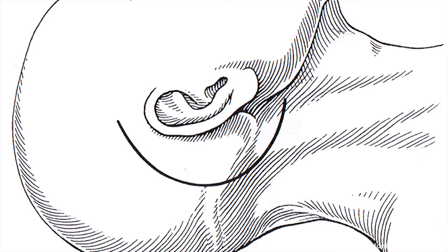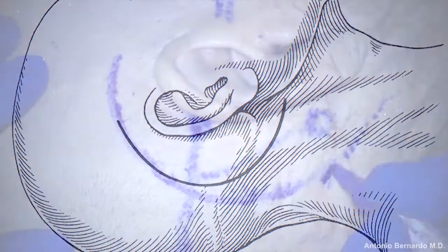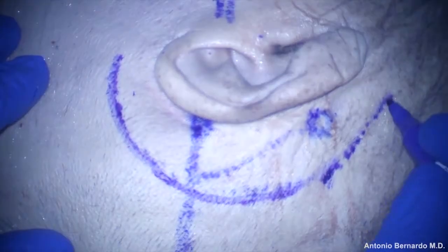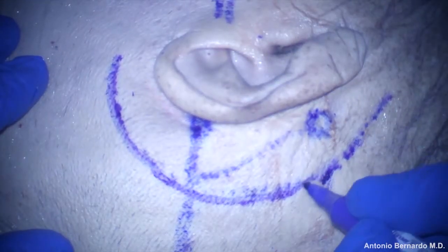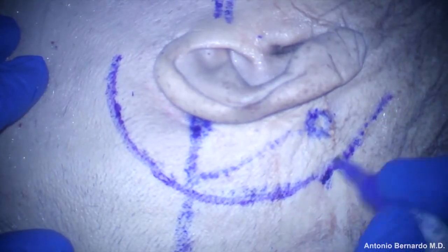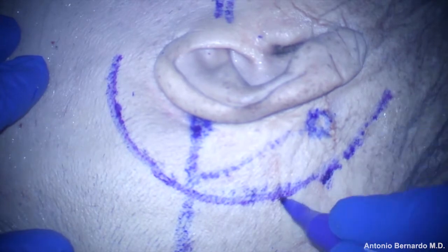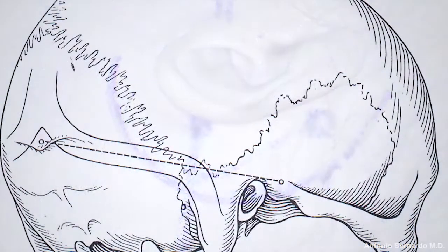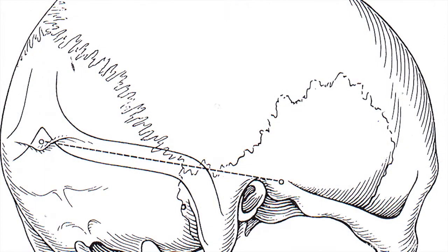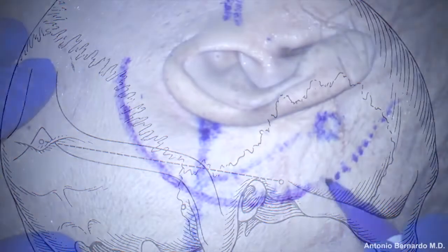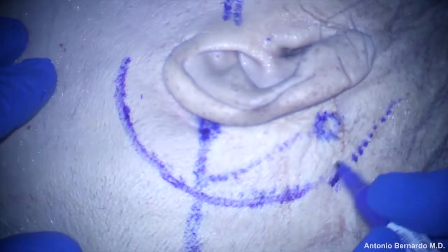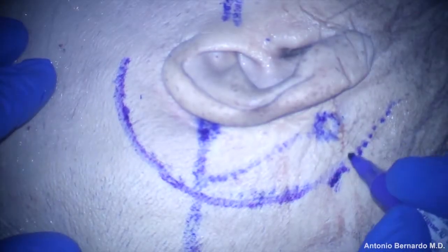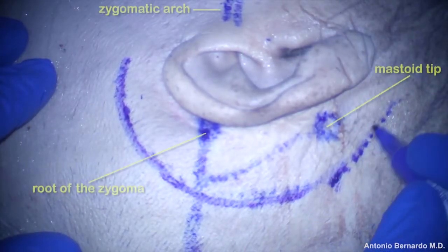Superficial landmarks are very important in mastoid drilling, particularly the zygomatic arch, the root of zygoma, and the imaginary line joining the root of zygoma with the union, which corresponds to the transverse sinus and the mastoid tip.